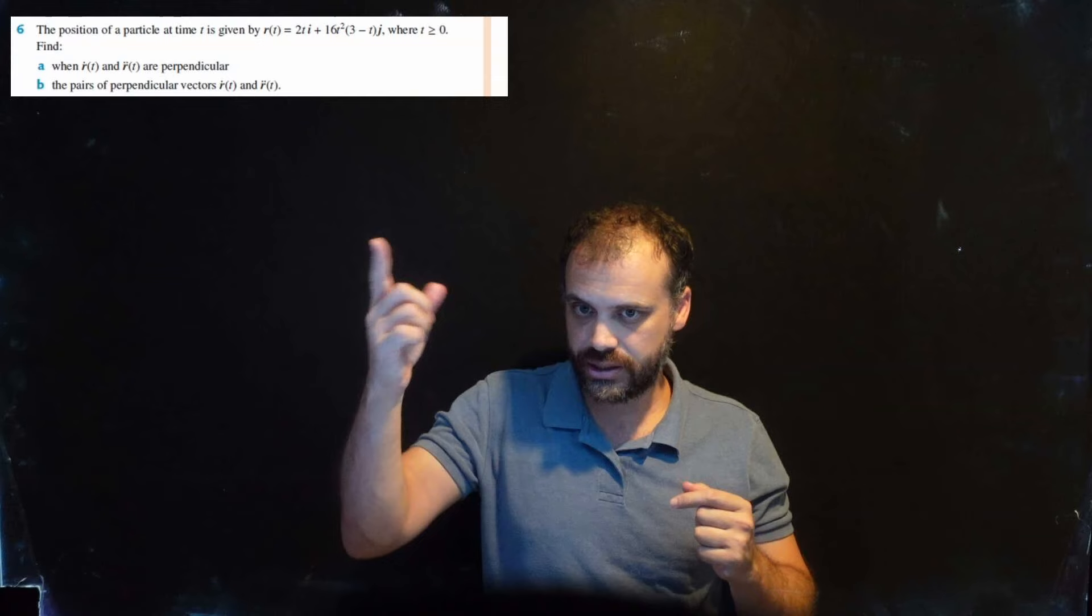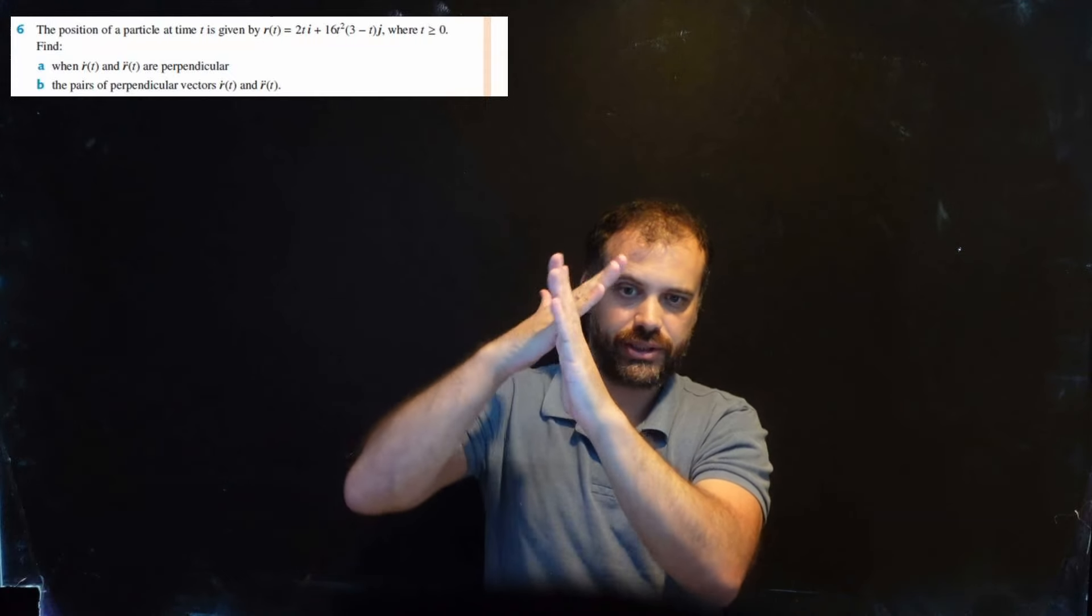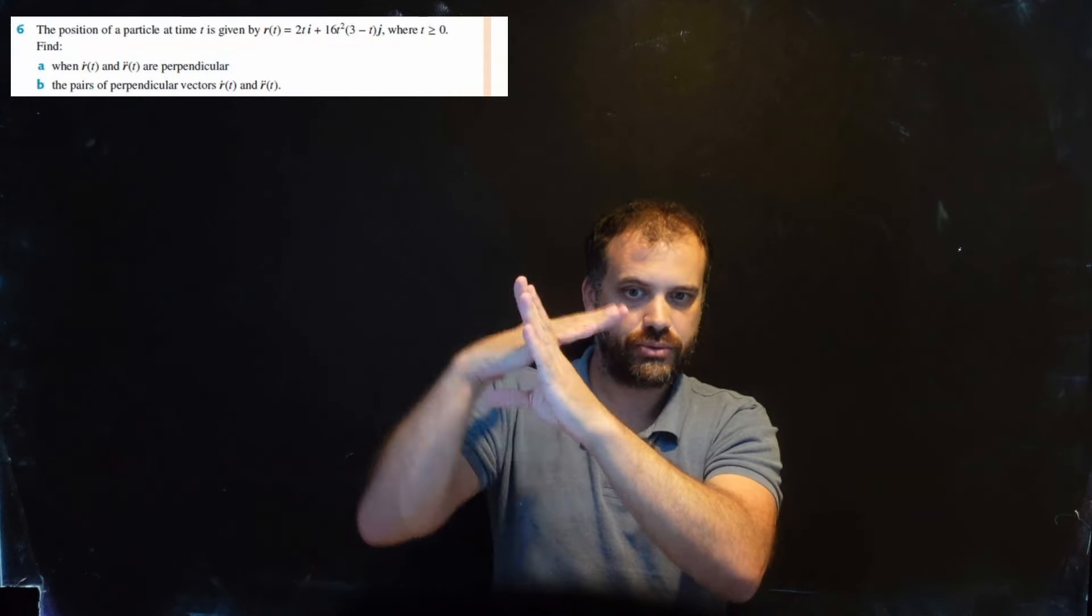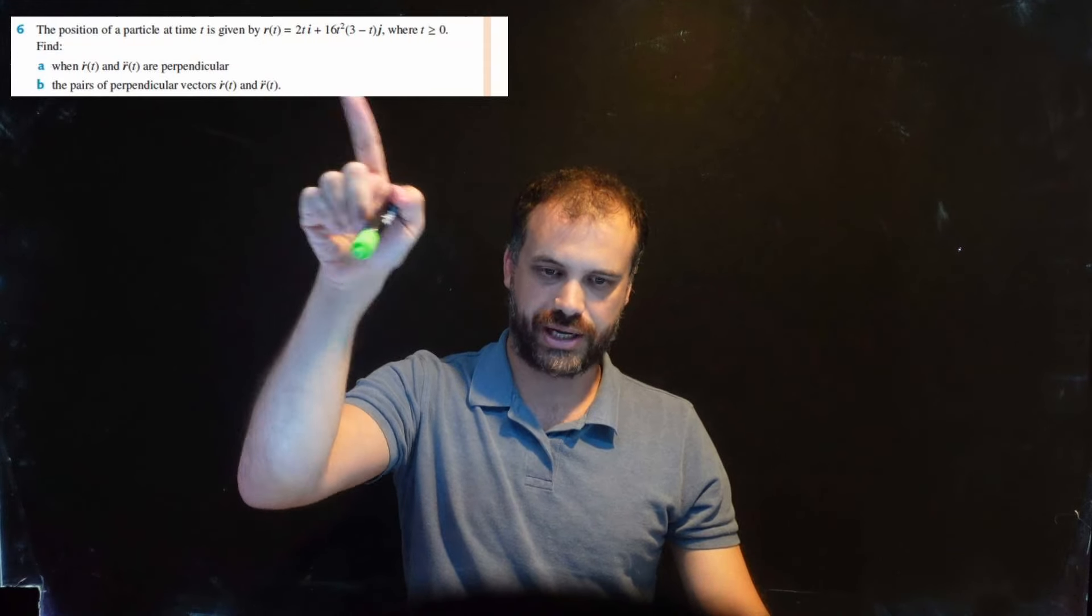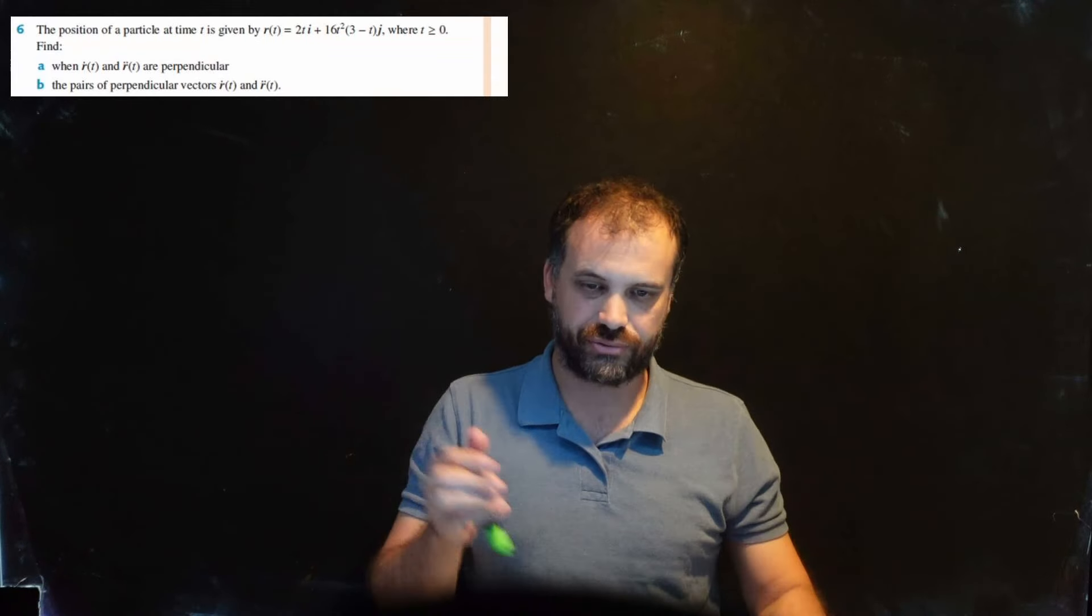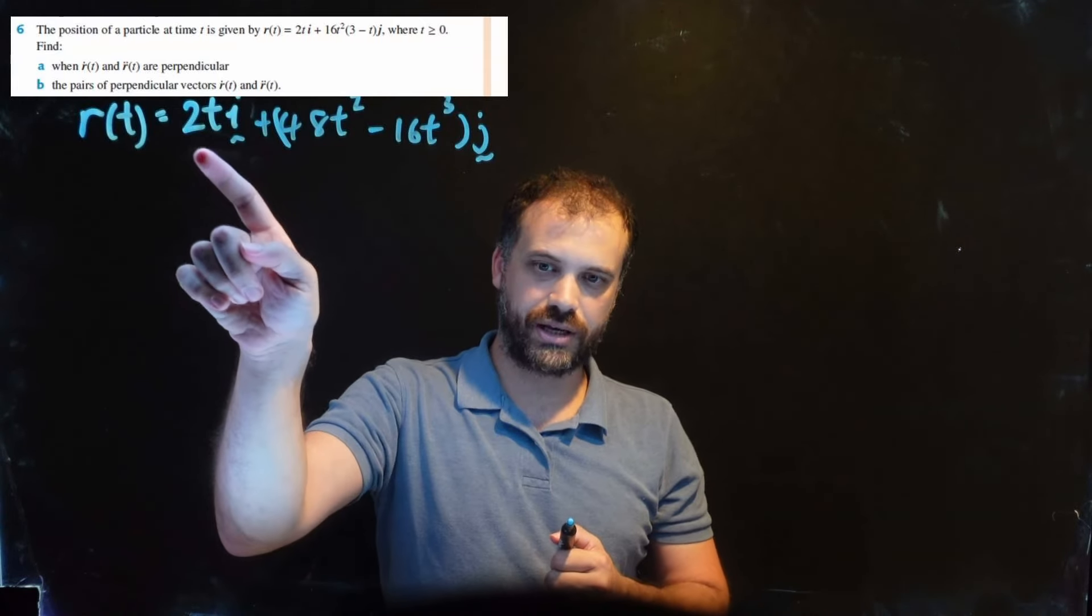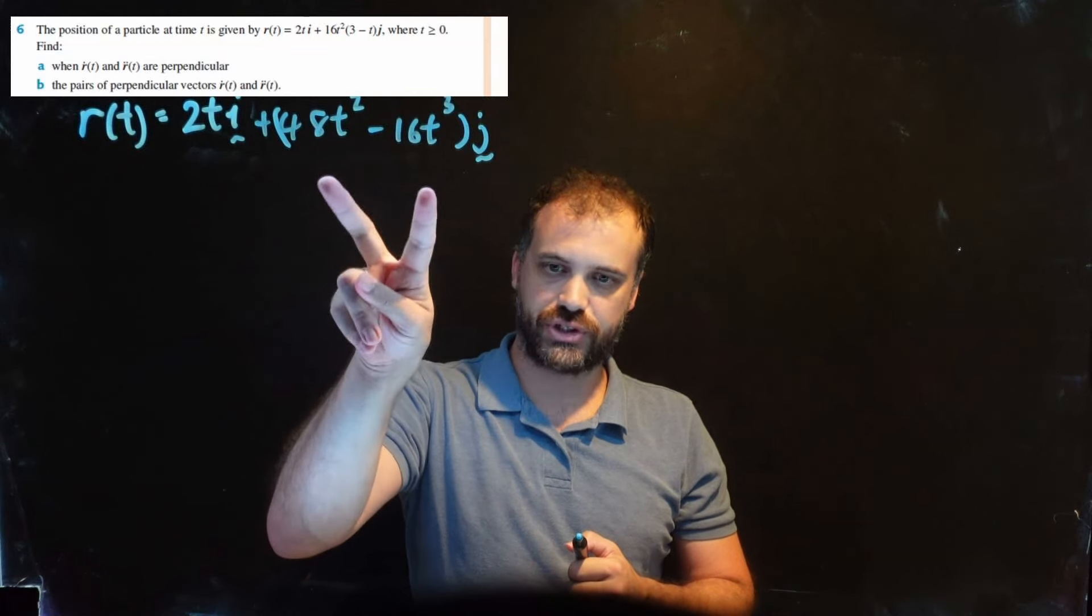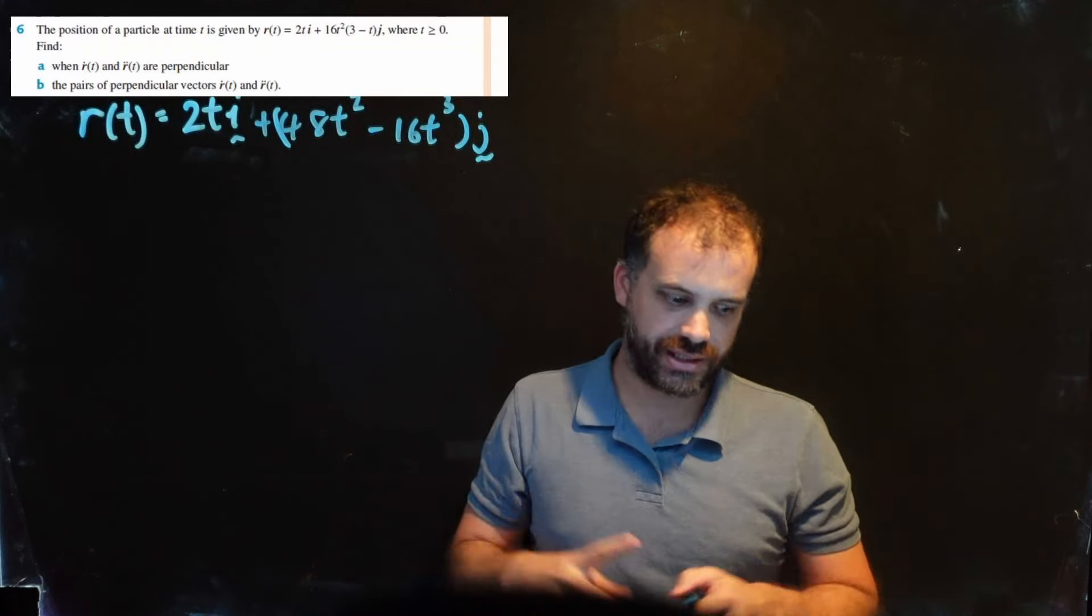This one says find when the velocity and acceleration vectors are perpendicular. I'm assuming that most of the time, the velocity and acceleration are not at right angles - maybe they're like this or a bit like this. But there seems to be at least one time when they are at right angles. First things first, let's find the velocity and acceleration vectors. I realized it's probably easier if we manipulate the displacement vector first by expanding 16t²(3-t). I'm going to rewrite the displacement vector: the 2ti bit didn't need rewriting, but expanding the brackets for j to be 48t² - 16t³ makes it easier to derive.